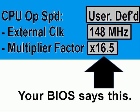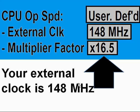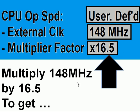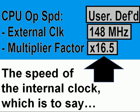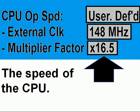Now, here's a real example. The external clock is 148 MHz, and the multiplier factor is times 16.5. That's what your BIOS says in this example. So your external clock is 148 MHz. Multiply 148 MHz by 16.5 to get the speed of the internal clock — which is to say, the speed of the CPU.